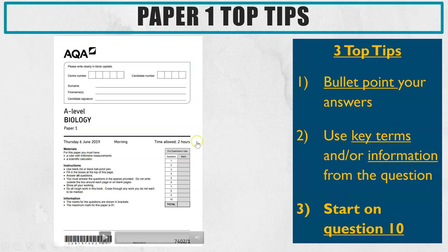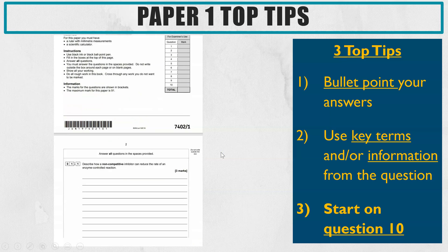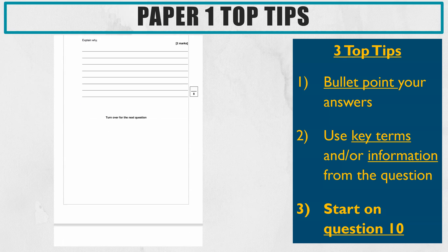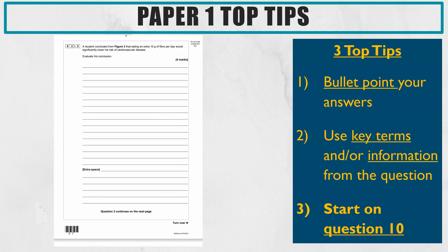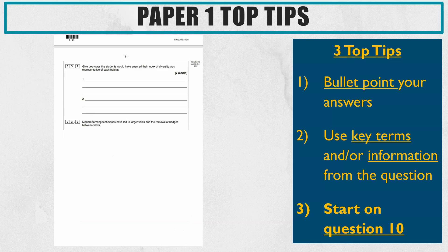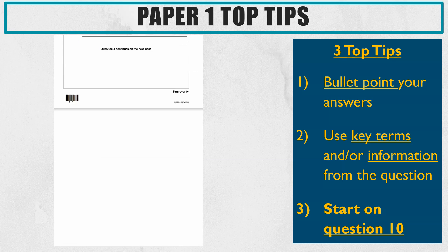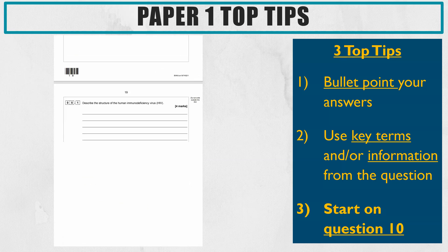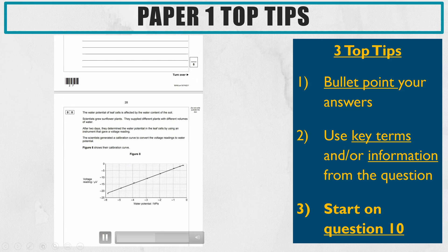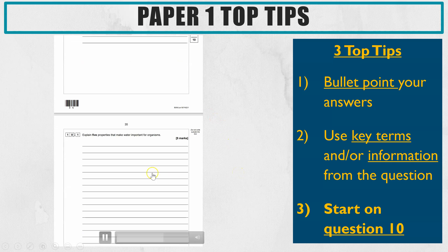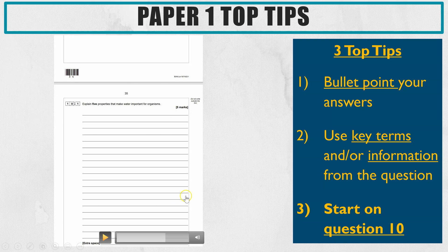Next is starting on question 10. I'm going to show you an example of a Paper 1. Scrolling through all of the earlier questions, you can see there's lots of questions with data, with information and calculations, and all of that takes a long time to read and process. Often they are really difficult questions and you might not pick up as many marks as you could on some of the questions at the end. Also notice that in some of these questions it's two marks but there are loads of lines — you do not have to fill that space. If it's two marks, that might still only be two bullet points.